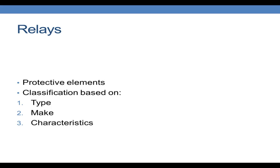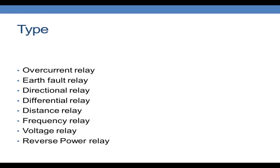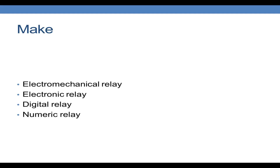Relays are classified depending upon their type, make, characteristics and more. In this lesson we will cover three classifications: type, make, and characteristics. Depending upon the type there are several relays such as overcurrent relay, earth fault relay, directional relay, differential relay, distance relay, frequency relay, voltage relay, reverse power relay and so on. Depending upon their construction, or make, there are electromechanical relays, electronic relays, digital relays and the numeric relay.